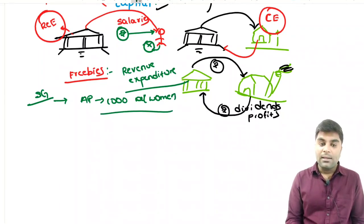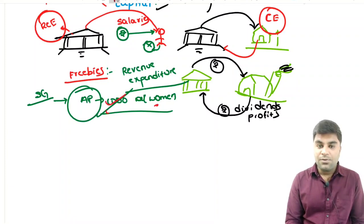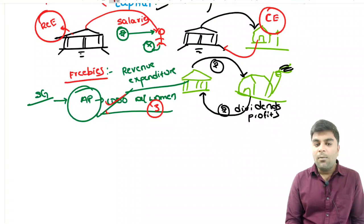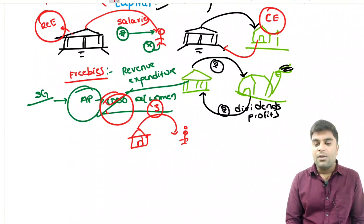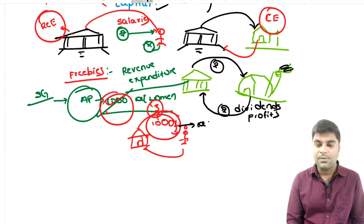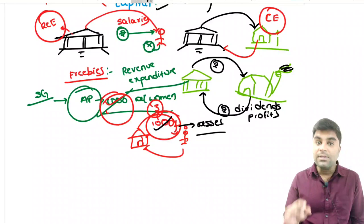When the government pays one thousand rupees to a woman, does it generate any kind of asset or revenue? No. When it does not create any kind of asset, we call such expenditure a revenue expenditure. Freebies are mostly associated with this kind of revenue expenditure. The main issue — the bone of contention — is what is the deficit in the economy.